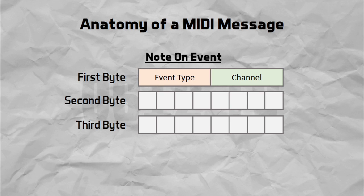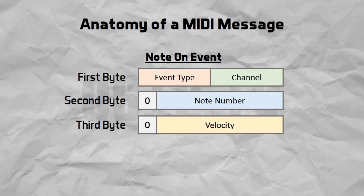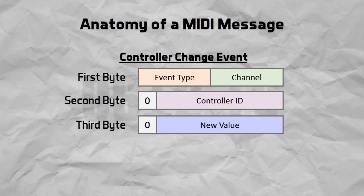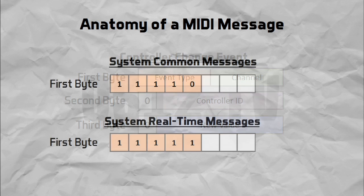Events like note on and note off give us 2 more bytes, describing which key was pressed as well as what velocity it was pressed with. Similarly, events like control change need to tell you which control has actually been changed and what its new value is. This pattern continues for nearly all of the MIDI messages, except the ones starting with 1 1 1 1. These are some of the more special system messages, and they tend to be used only in special circumstances.